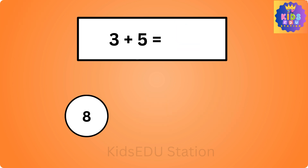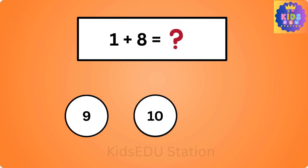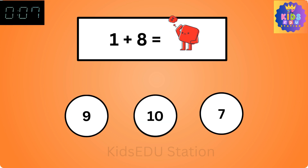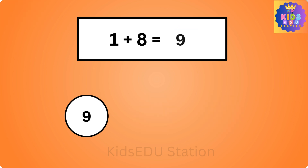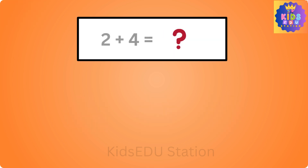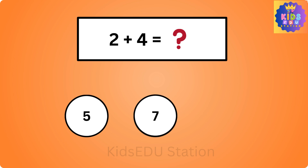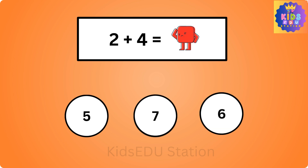3 plus 5 is 8. What is 1 plus 8? 9, 10, 7. 1 plus 8 is 9. What is 2 plus 4? 5, 7, 6.